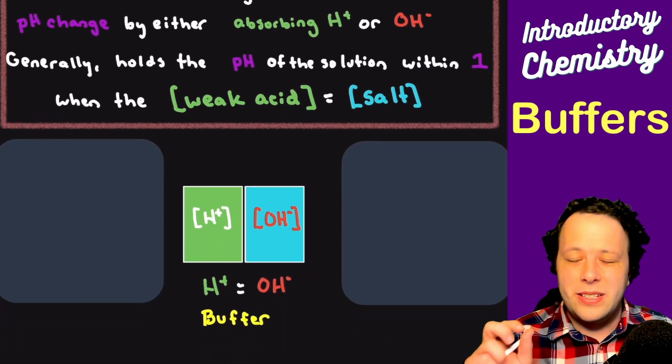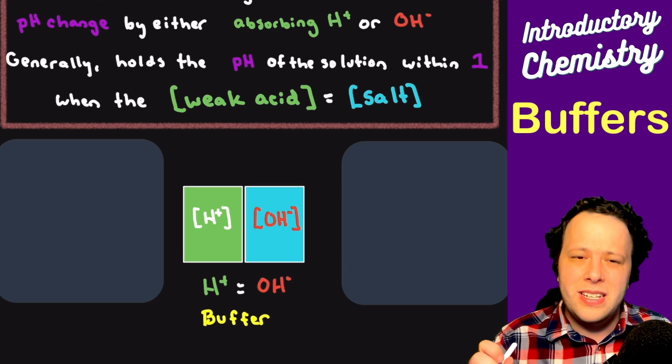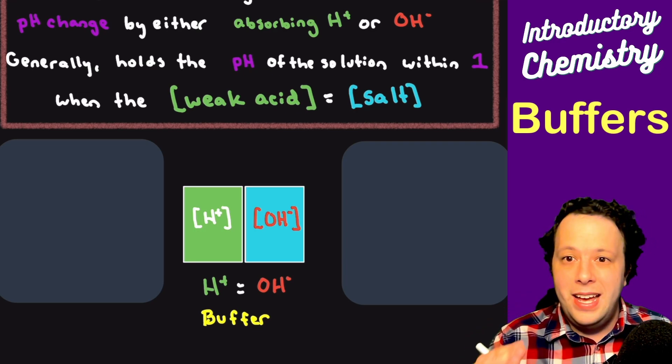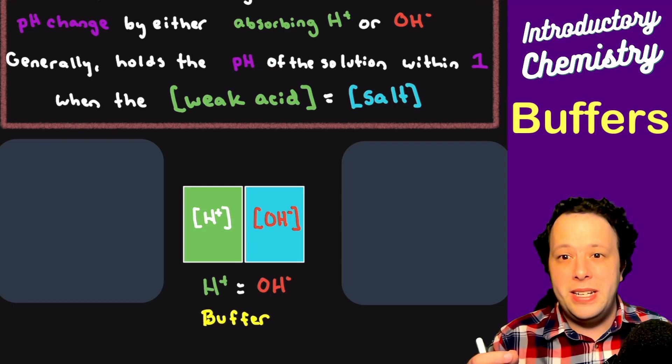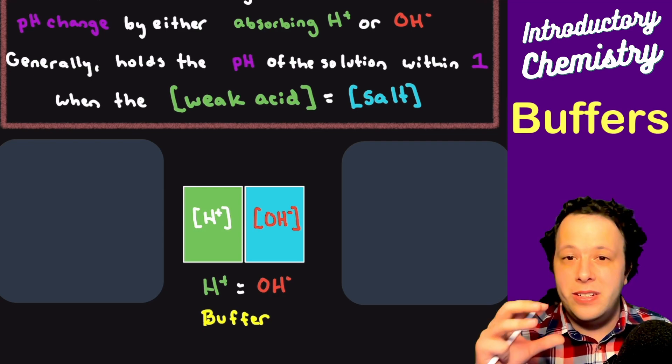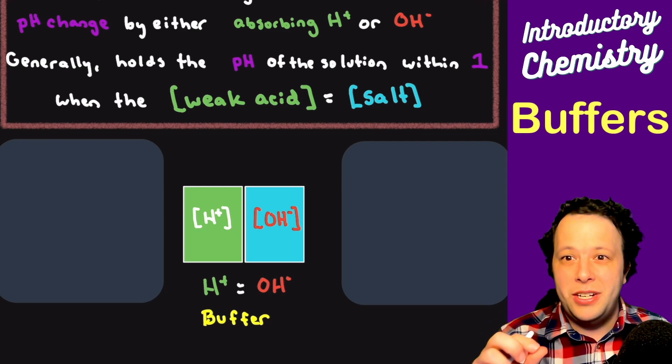This is something we can calculate, which I'll show you how to do for a basic, simple buffer. The whole idea, first, is that you have the acid and the salt of its conjugate base. When both molarities of each one equal each other, you have your buffer. This is the pH where it works.